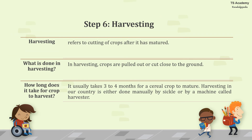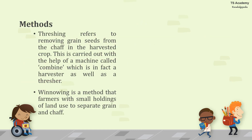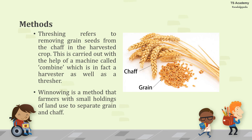Harvesting simply means cutting of crops after they have matured. Crops are pulled out or cut close to the ground, and it usually takes 3–4 months for a crop to mature. Harvesting in our country is either done manually by sickle or by a machine called a harvester. Threshing refers to removing grain seeds from the chaff in the harvested crop, carried out with a machine called a combine, which is both a harvester and a thresher. Winnowing is another method used by farmers with small land holdings to separate grain from chaff.